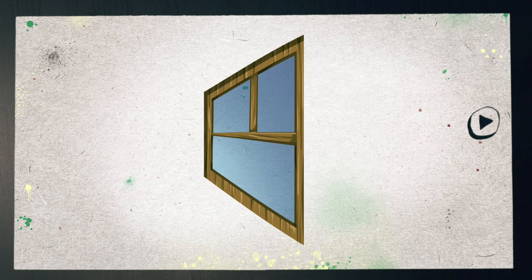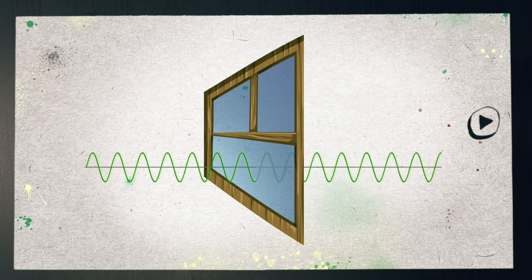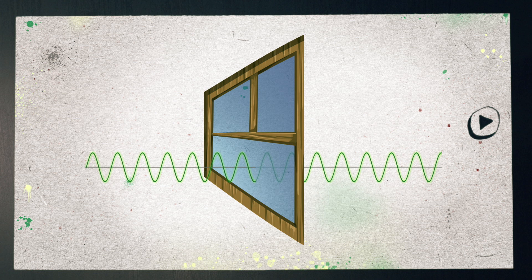Some objects, like glass, don't do much of any of those things. Glass is much better at letting light pass through. This is known as transmission. We can say that glass transmits light.